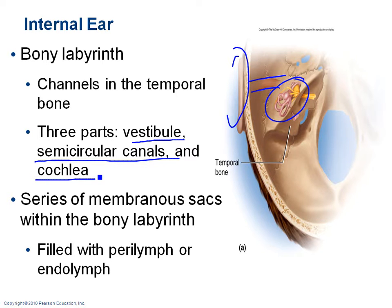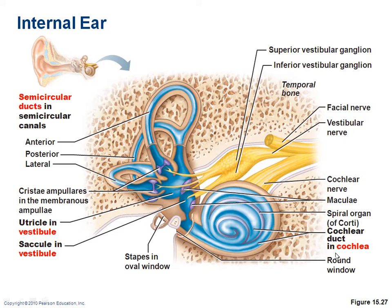The internal ear is a bony labyrinth — a maze inside your temporal bone. It consists of membranous sacs filled with fluid: either perilymph, which has the consistency of cerebrospinal fluid, or endolymph, which has the consistency of intracellular fluid and is high in potassium.